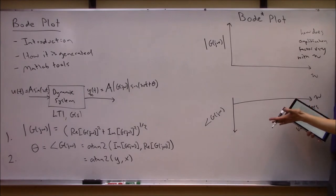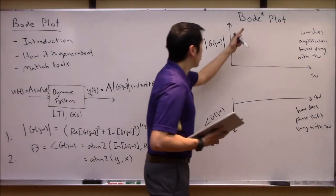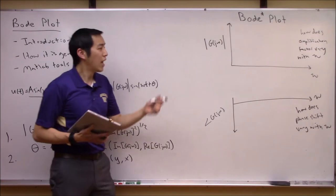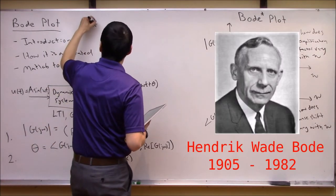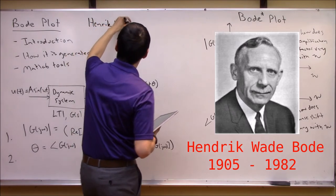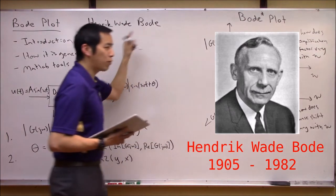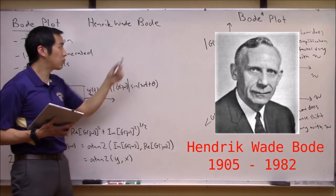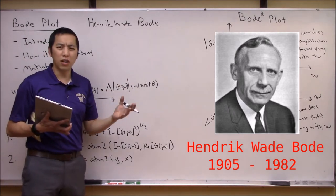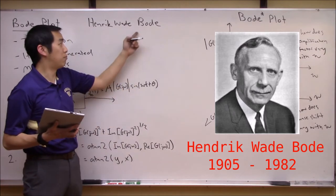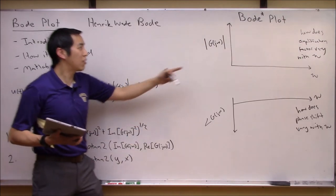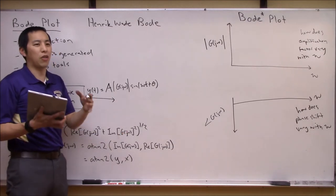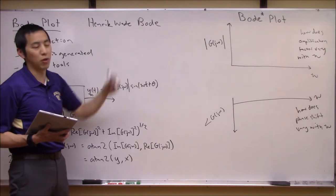It might be useful to discuss a bit of history. The Bode plot was named after an American engineer born in Wisconsin who developed this in the 1930s — Henrik Wade Bode. The pronunciation is commonly 'Bode,' though he had Dutch ancestry and some people say 'Boh-deh' or other variants depending on who you talk to. The most common pronunciation in controls engineering is just 'Bode.' It's also interesting that this isn't super old technology — it was developed within the last hundred years.